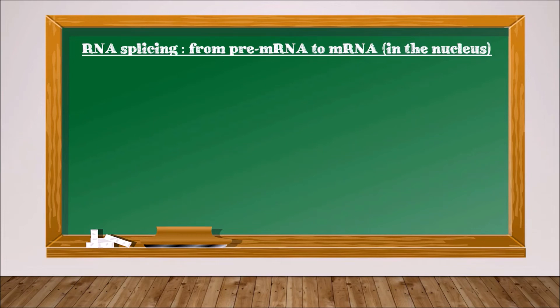The pre-messenger RNA molecule made during transcription is not yet mature to allow protein production. Indeed, it must first undergo a second stage called splicing.